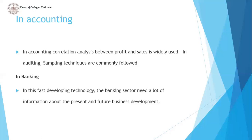In accounting, we can use correlation and regression analysis. We study the relationship between two variables — for example, profit and sales. If the price is reduced, sales will increase. We study positive and negative relationships using statistics. We also study a lot of auditing and data using samples.